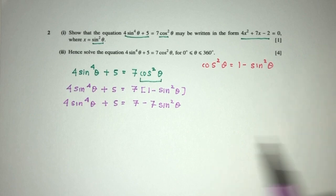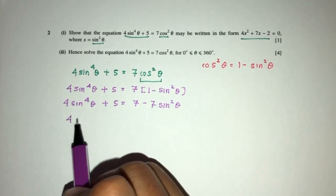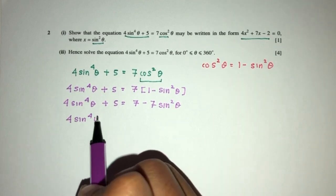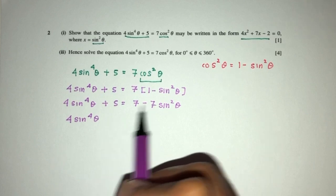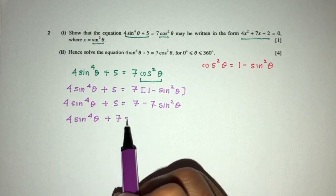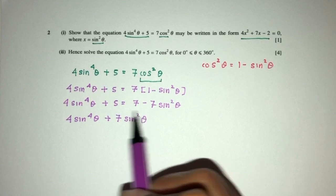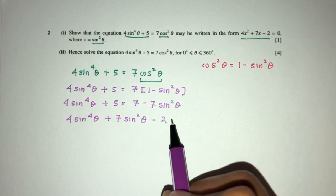Now let's turn everything to one side. Over here you will have 4sin⁴θ and then you will have plus 7sin²θ. 5 minus 7 will be minus 2 equal to 0.